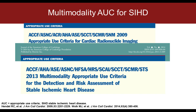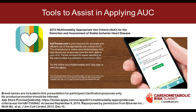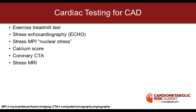What most of us in cardiology now live by is the 2013 multimodality appropriate use criterion for detection and risk of stable ischemic heart disease. It's not meant to determine whether one test is better than another, but which tests are reasonable in a clinical scenario. Today we're going to talk about exercise treadmill tests, echocardiography with stress, stress nuclear testing or myocardial perfusion scan, calcium score, coronary CTA, and stress MRI.